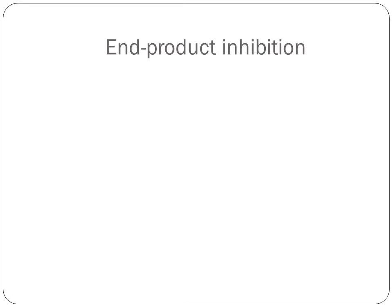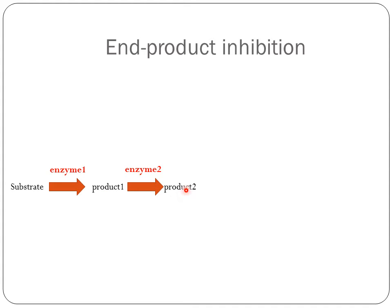Finally, there is something in the body called end product inhibition, a mechanism used by many inhibitors. Suppose we have a series of metabolic reactions catalyzed by enzymes: a substrate is changed to product 1 by enzyme 1, product 1 is changed to product 2 by enzyme 2, and product 2 is changed to product 3 by enzyme 3.